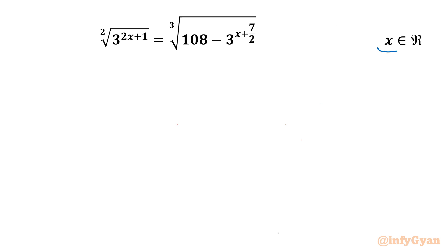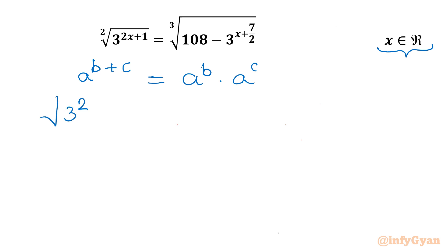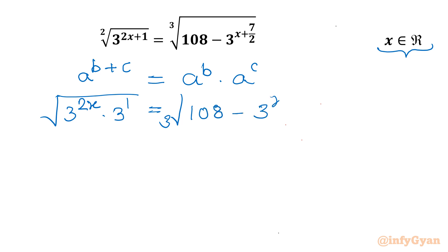Let's get started by writing one powerful exponential property: a power b plus c, we can write as a power b times a power c. Applying this to our equation: square root 3 power 2x times 3 power 1, equal to cube root of 108 minus 3 power 1 times 3 power x times 3 power 7 over 2.